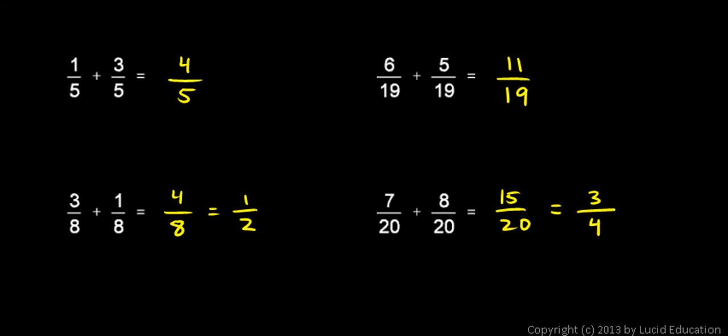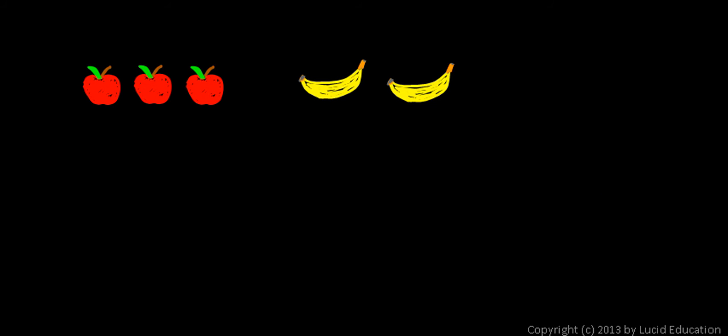Now remember that we can't add things that are not of the same type. So if we had 3 apples plus 2 bananas, we couldn't combine those. Apples and bananas are different things. 3 apples plus 2 bananas is simply equal to 3 apples and 2 bananas.